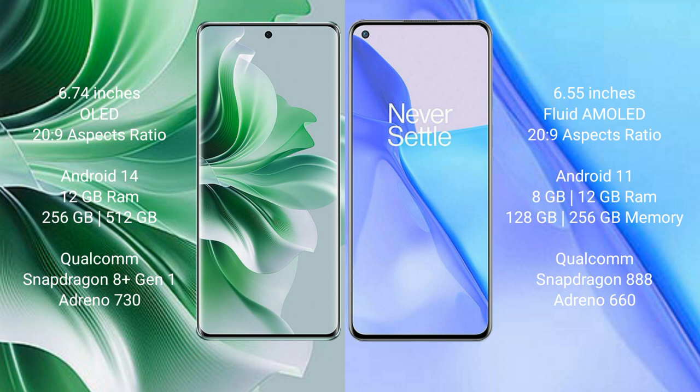Oppo Reno 11 Pro runs on the Android 14 operating system. OnePlus 9 runs on Android 11. Oppo Reno 11 Pro comes with 12GB RAM and 256GB or 512GB internal storage, a Qualcomm Snapdragon 8 Gen 1 processor, and Adreno 730 GPU.